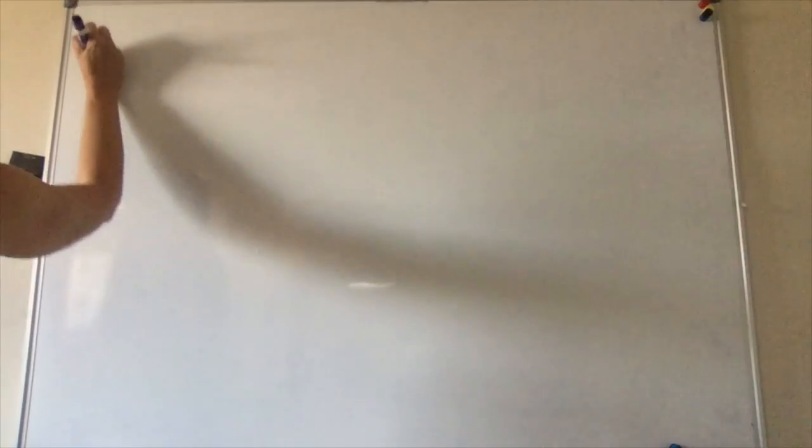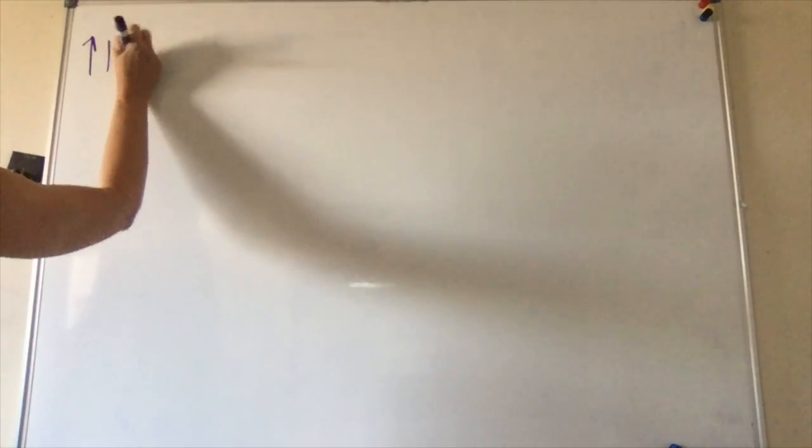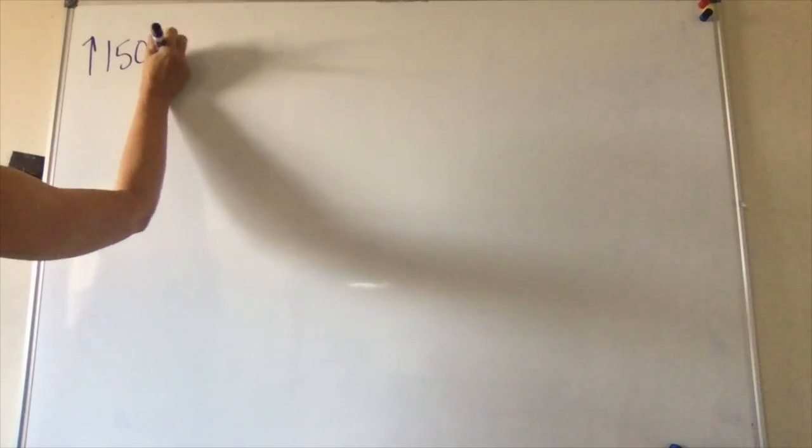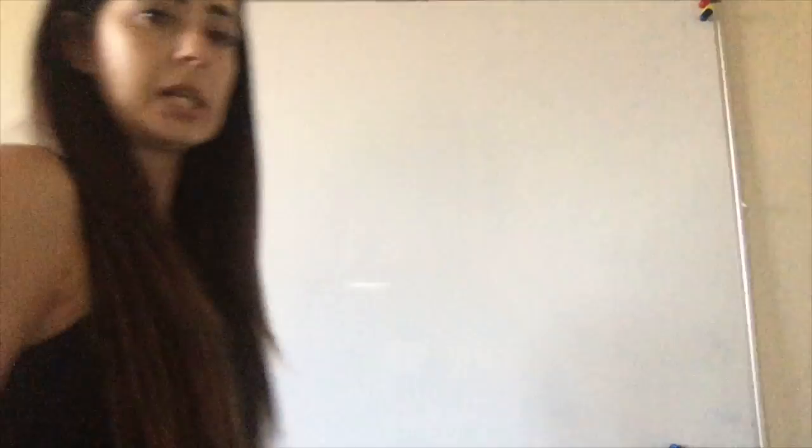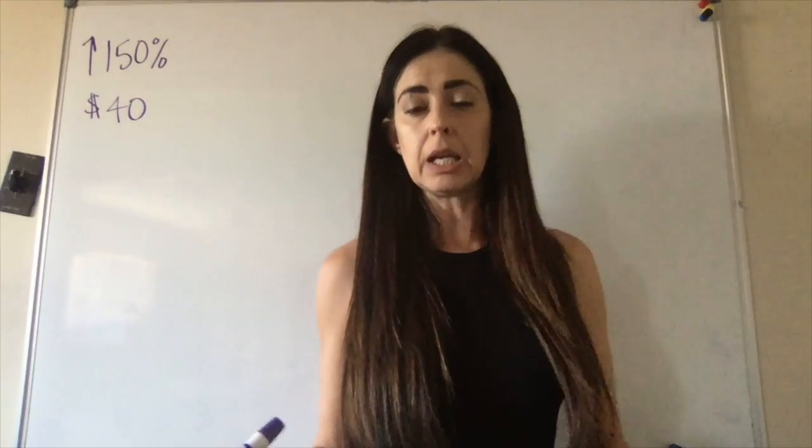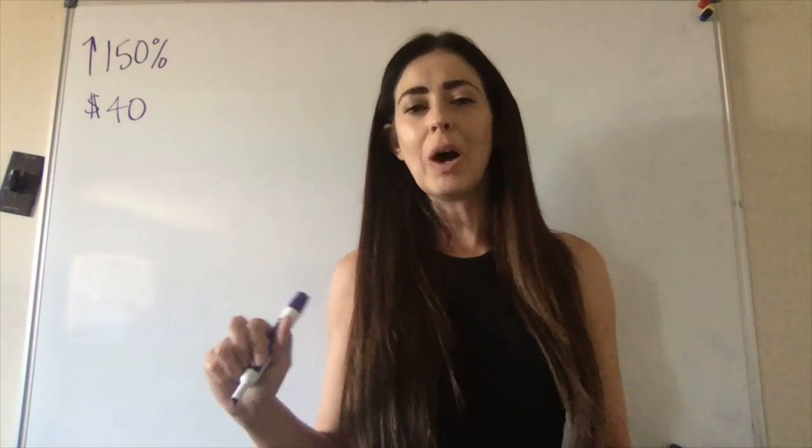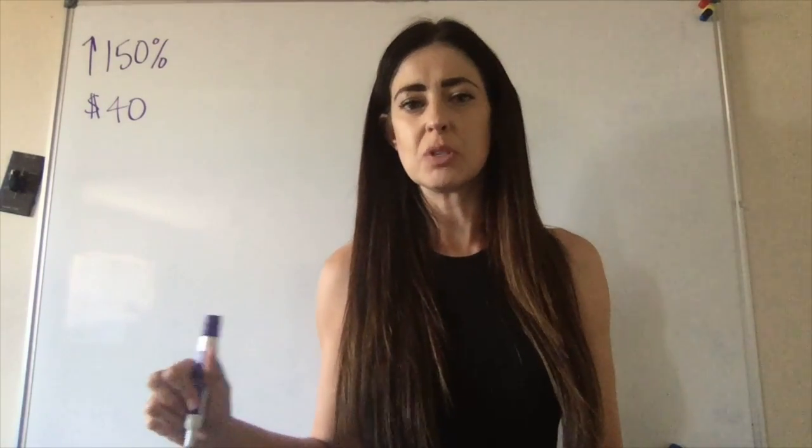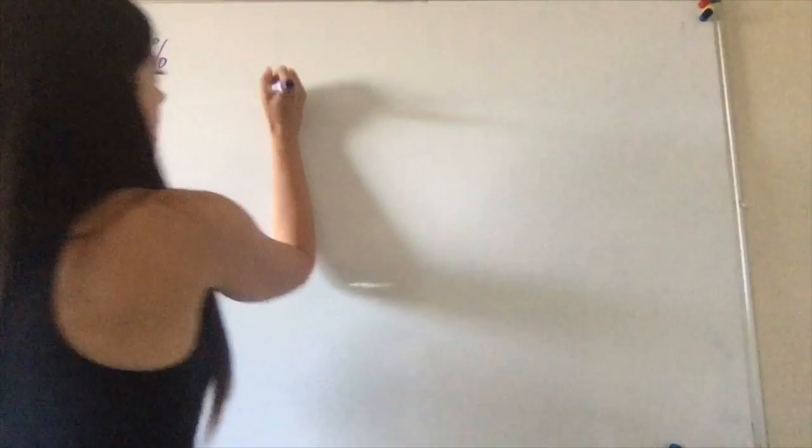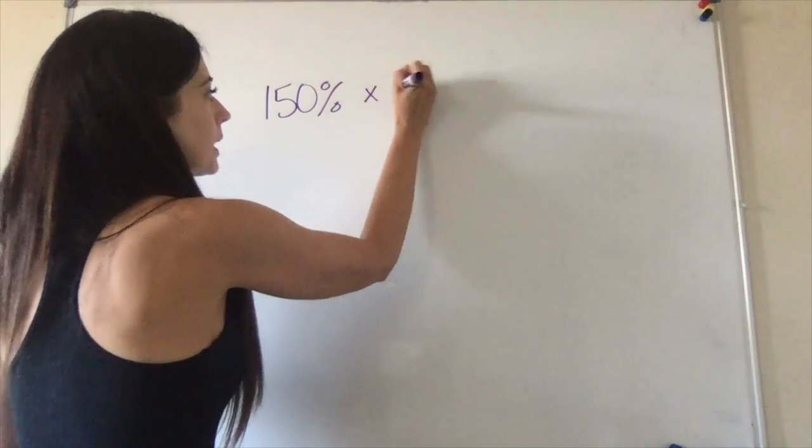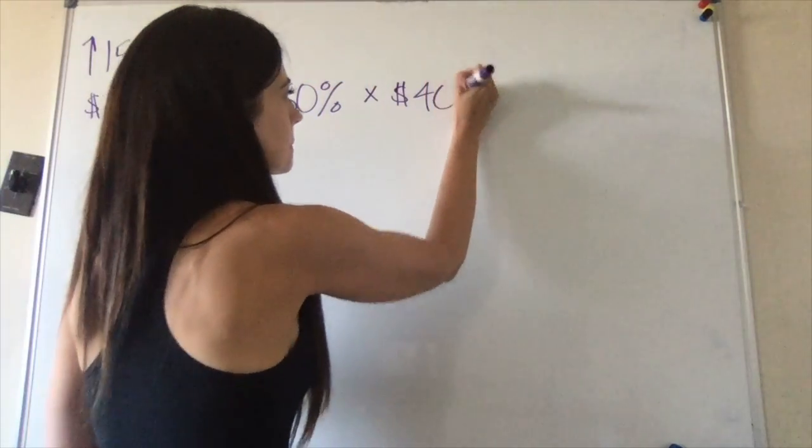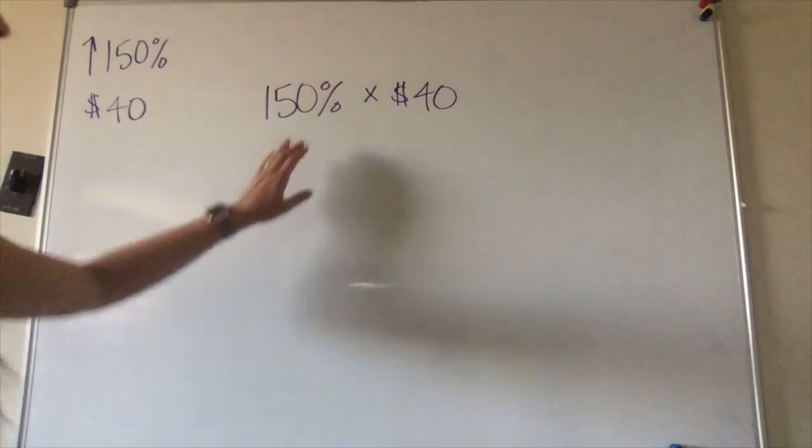So the first thing I'm going to note is that we're marking up a hundred and fifty percent, and the original price is forty dollars. So the is-of statement that I'm going to make is: what is 150 percent of forty? And so 'what is' 150 percent 'of' means multiplication, forty dollars.